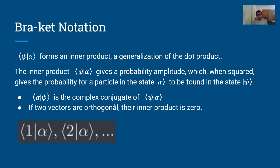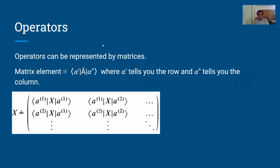If two vectors are orthogonal, their inner product is zero — this is what the component extraction via dot product is doing. For example, taking the dot product with a basis vector picks out one component, say alpha sub one, while all other components cancel due to orthogonality. You also have operators that can be represented by matrices, like the Hamiltonian matrix. The matrix element uses alpha-prime for the row and alpha-double-prime for the column. We'll get much more concrete about this using the system of spin-1/2 states.